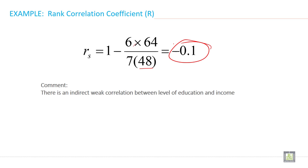It means there is an indirect weak correlation between level of education and income.